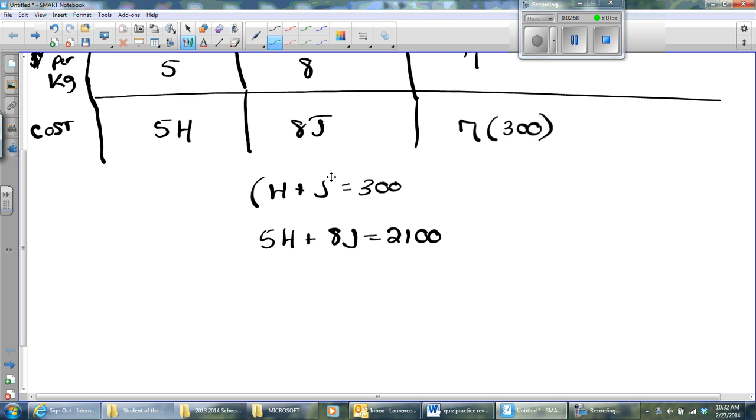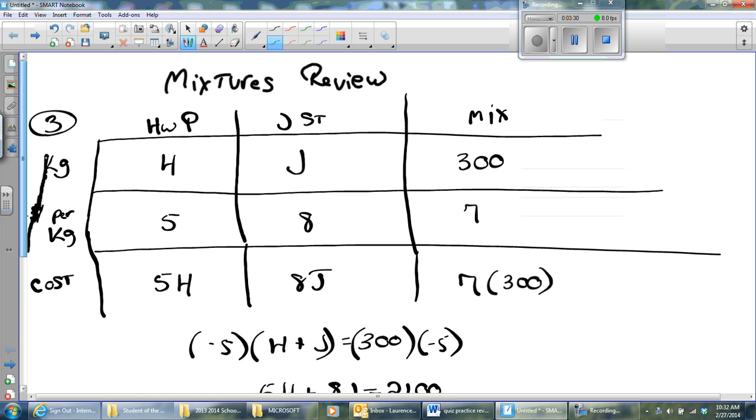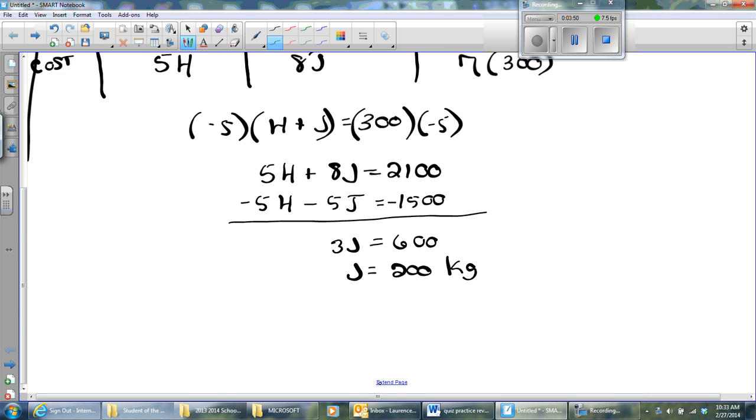I'll do this by elimination. I'm going to multiply by negative 5, and when I do that my new equation will become negative 5H minus 5J equals minus 1500. Adding together I get 3J equals 600, and therefore J is 200 kilograms. So we need 200 kilograms of the Jamaican strawberries, and to get the other one it must be 100. I pray I give you a problem that easy on tomorrow's quiz.